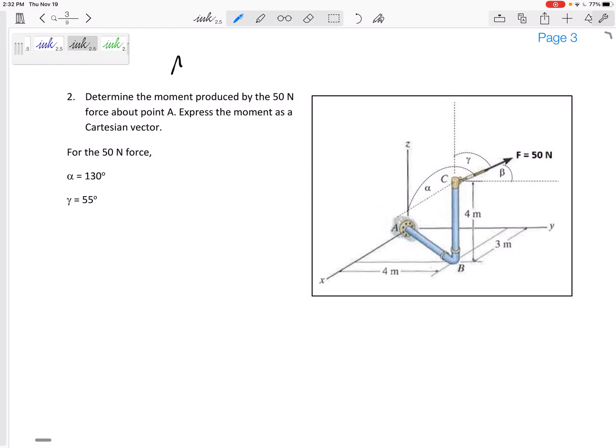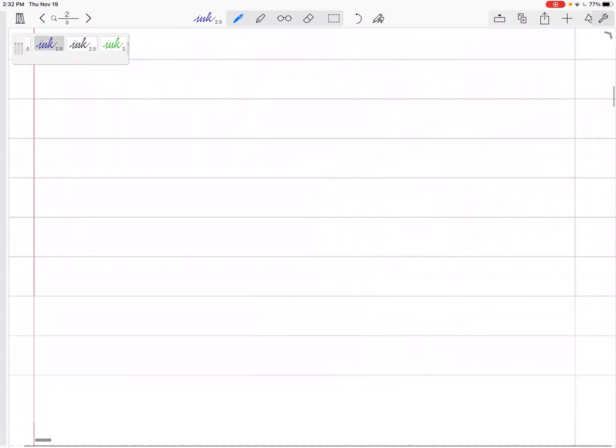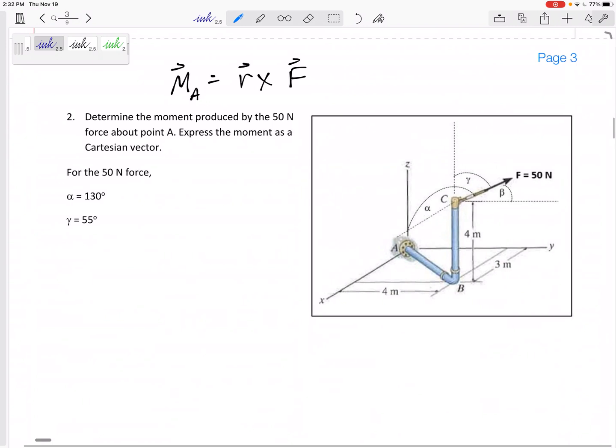So the first thing that I'm gonna write on my test is moment about point A is, what's the formula? R cross F, right? It's R cross F, and I know that this R right here needs to go from the point to the force. That R needs to go from the point to the force, and then this F is my vector broken into its component form.